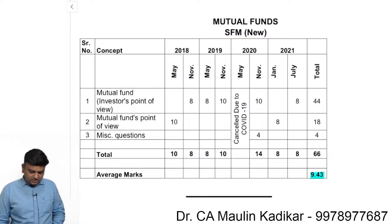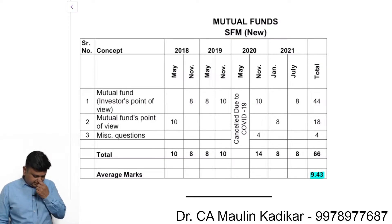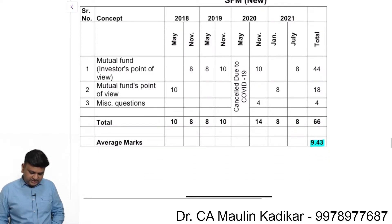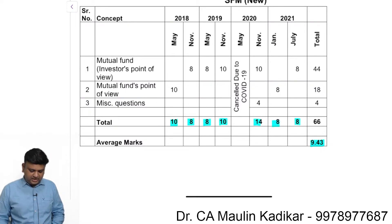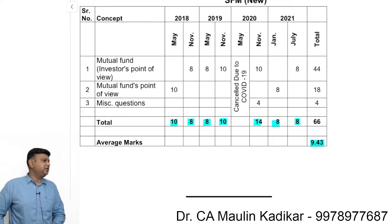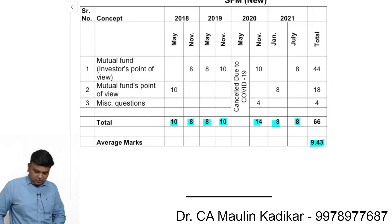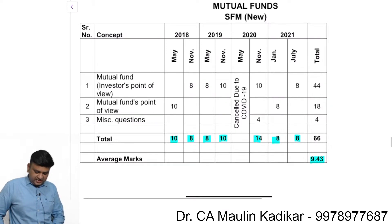The Mutual Fund chapter has on an average 9 marks asked. Till July 2021, you can see it has been 10 marks, 8 marks, 8 marks, 10 marks, 14, 8, 8. Approximately an 8-mark question comes from this chapter. You can see that once a 14-mark question also came.